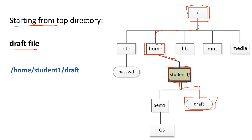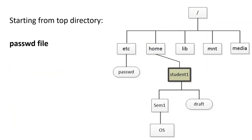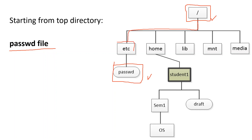The third and last example of absolute path is the password file. First, identify where the password file is — it is under etc. The path from root is: slash etc slash password. So the absolute path of the password file is slash etc slash password. Given a system, the user needs to provide the path name so the system can recognize the location of the file. We are now finished with absolute path.